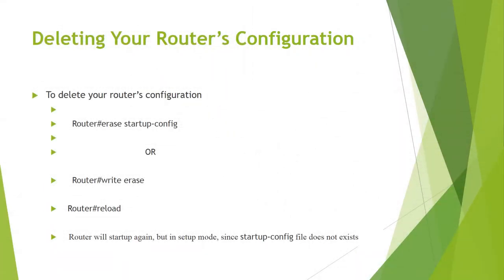In this lecture we will be discussing further configuration, specifically deleting your router configuration. You can delete your router configuration by applying a startup-config command, or write erase, and then the reload command to reload the router. The router will start up again but in setup mode since the startup config file does not exist in this case.